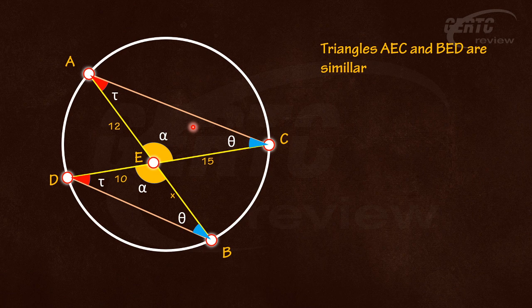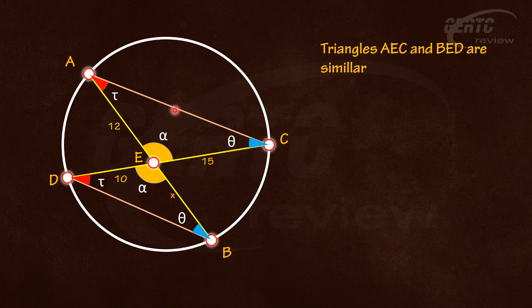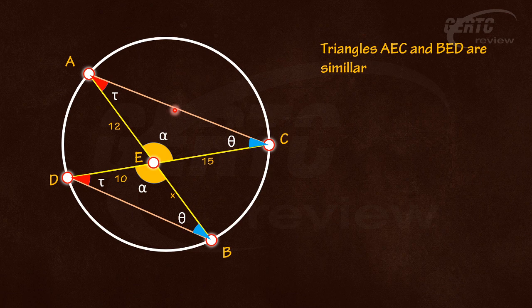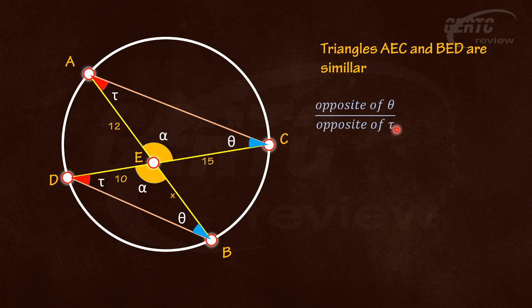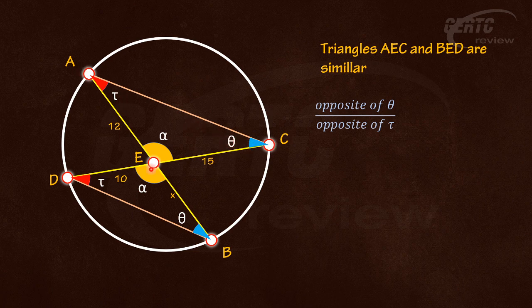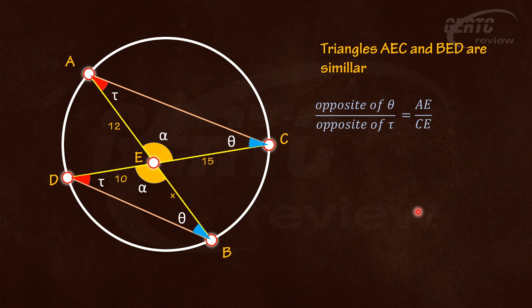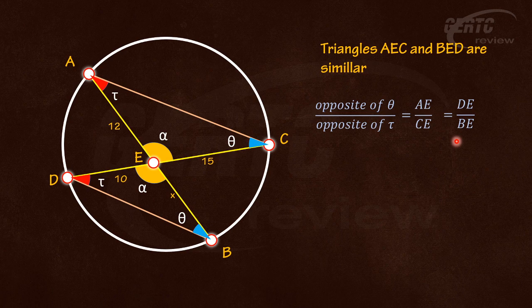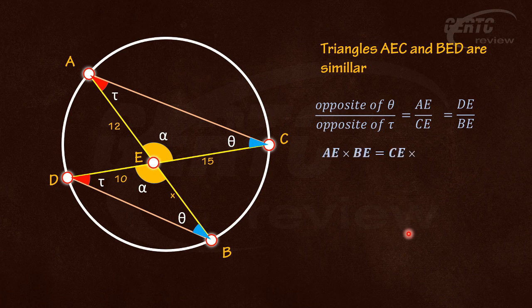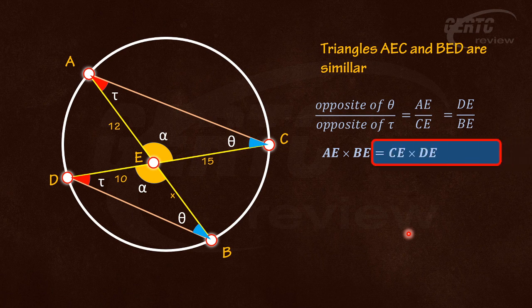We can apply here ratio and proportion. To avoid confusion, opposite of θ is to opposite of τ. In the upper triangle, opposite of θ is AE and opposite of τ is CE. So AE is to CE. In the lower triangle, opposite of θ is DE and opposite of τ is BE. So that will be DE is to BE. Cross-multiply, so you will have AE times BE equals CE times DE. And that is the principle.